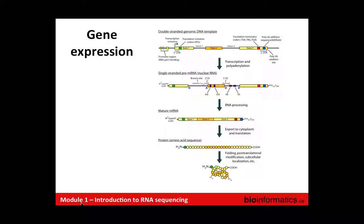Once polyadenylated, the mature mRNA gets exported to the cytoplasm where translation into protein occurs if it's a protein-coding transcript. Post-translational modifications may occur, and this protein is often what we're really interested in biologically. If we could sequence these things directly in a high-throughput fashion we would, but most proteomics technology is still low to medium throughput. We can study transcripts in a very high-throughput fashion by RNA-seq.